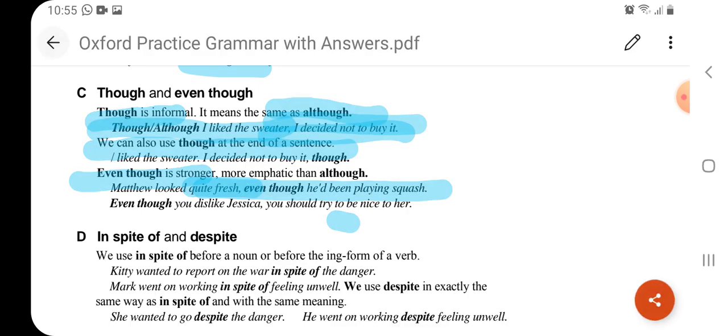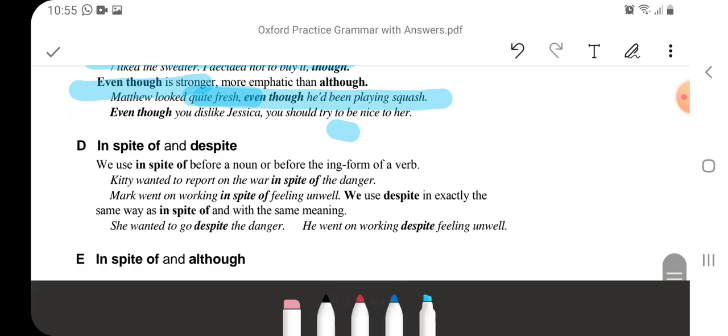The next conjunction is in spite of and despite. We use both of them before a noun or before the -ing form of a verb. So in spite of will take a position before nouns and they will use words which are ending in -ing. See, Kitty wanted to report on the war in spite of danger. Mark went on working in spite of feeling unwell. In spite of sleeping, in spite of working hard she couldn't pass. We use despite exactly the same way as in spite of.